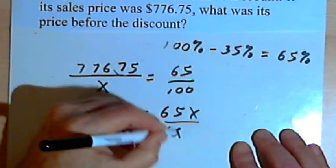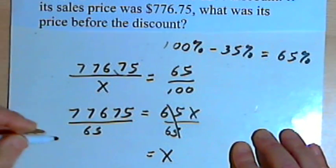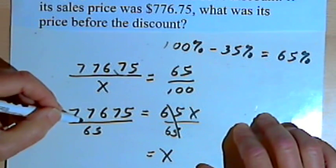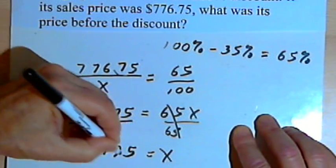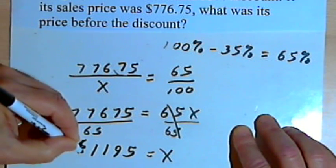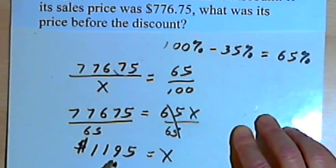So on the right side, I've got my x all by itself. On the left side, when I divide that, I'm going to get $1,195. So that would be the original price for the laptop before the discount, before the 35% discount.